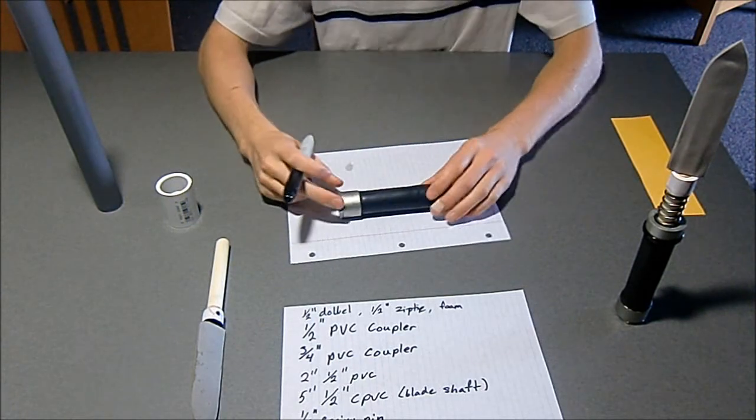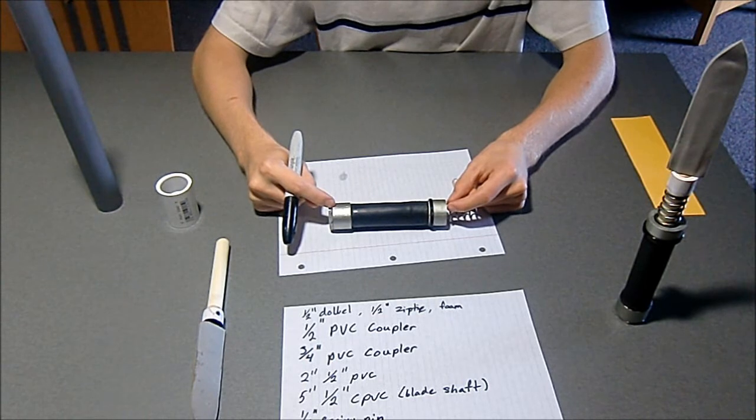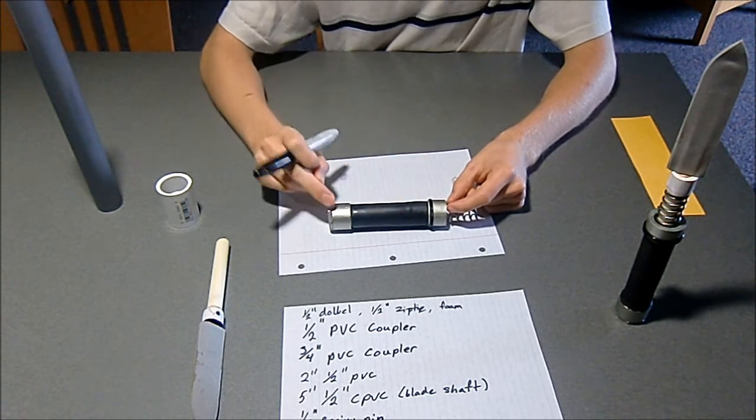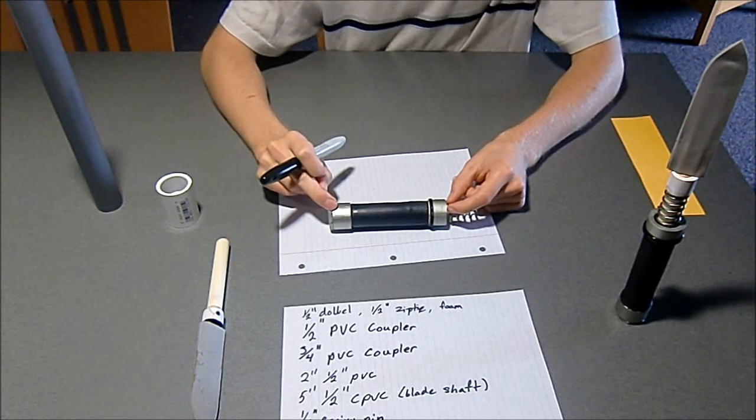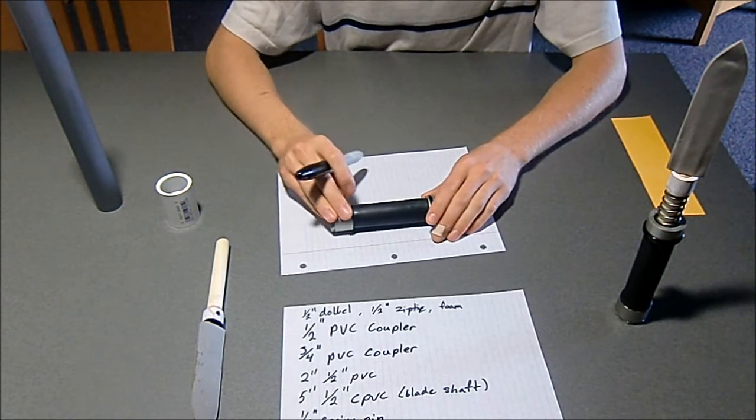These two rings here, each one of these is half of a three-quarter inch PVC coupler. So what I did is just got a couple of them, cut them in half to make my handles.